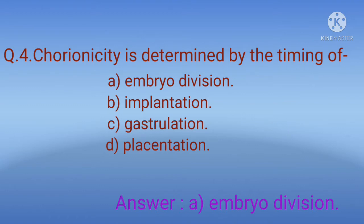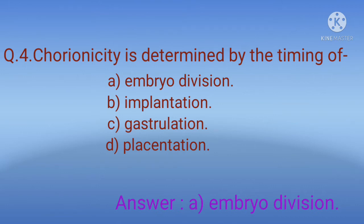Some 15 hours later the two cells divide to become four. During the first eight or nine days after conception the cells that will eventually form the embryo continue to divide. Implantation refers to the attachment of the fertilized egg to the uterine lining, occurring approximately six or seven days after conception. Gastrulation is the process during which the blastula is reorganized into a multi-layer structure known as gastrula.